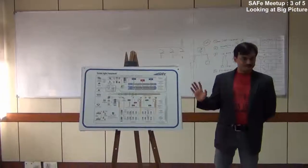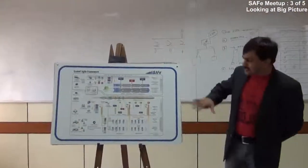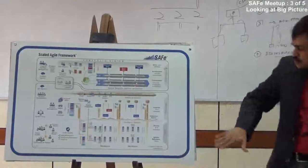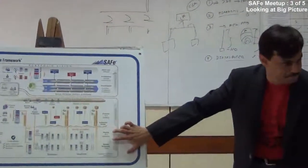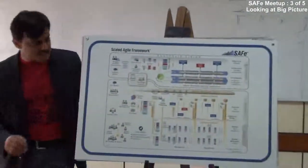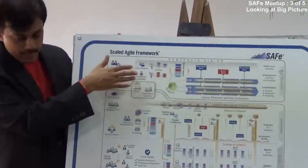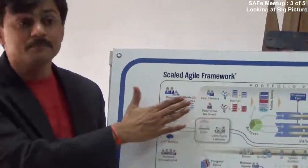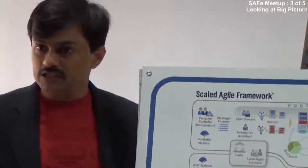This is the SAFe big picture, available at scaledagileframework.com. This picture shows three layers: the portfolio layer, the program layer, and the team layer. It talks about how business strategies feed into this framework, with people who own the business strategies working at the business level with epics.